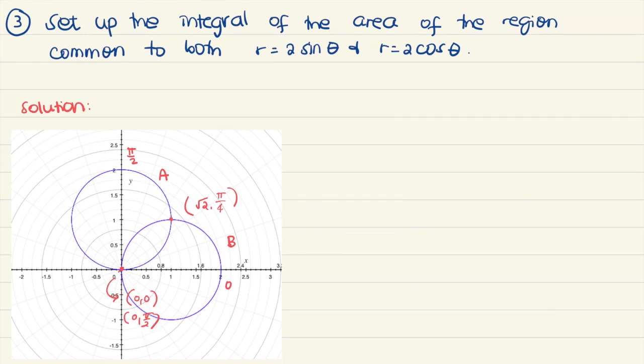We notice that the region can be split around pi over 4. We have a first part — let's call that A — and a second part — let's call that B.